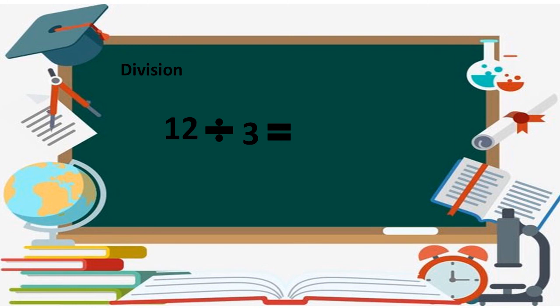Now we can do division with whole numbers: 12 divided by 3. Here you read the table of 3 until you get the number 12. Three 4s are 12, so 4 is our answer. Students, we have performed all four fundamental operations with whole numbers.